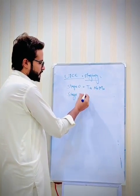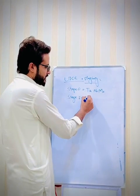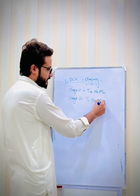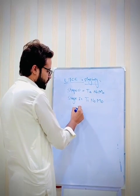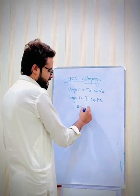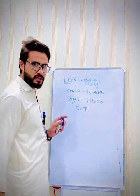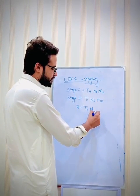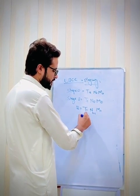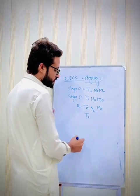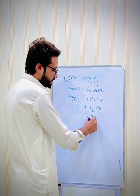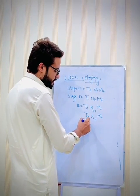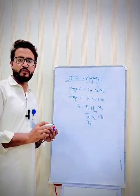Stage one means tumor size is less than two centimeters, no lymph node involvement, and no metastasis. Stage two is if tumor size is less than two centimeters and lymph node involvement may or may not be present and no metastasis, or tumor size is two to five centimeters with or without lymph node involvement and no metastasis. T3 means tumor size from two to five centimeters.